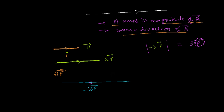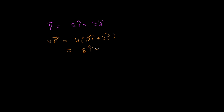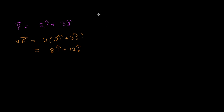Let's take an example. Say I have a vector p equals 2i plus 3j. If I multiply this vector by 4, then 4 times p equals 4 times (2i + 3j), which gives 8i and 12j. That's it.